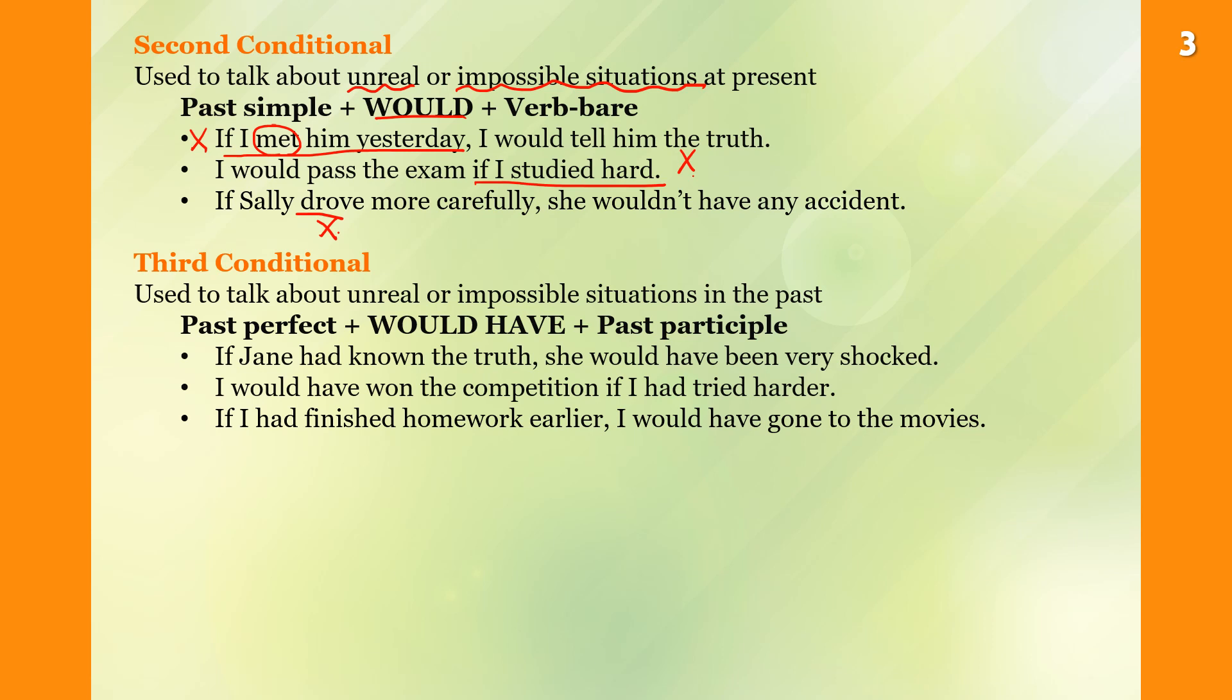Third conditional is used to talk about unreal or impossible situations in the past. Past perfect plus would have. If Jane had known the truth, she would have been very shocked. I would have won the competition if I had tried harder. So it means I didn't try hard. If I had finished the homework earlier, I would have gone to the movies, but I didn't go to the movies because I didn't finish the homework earlier. Just remember the conditionals.